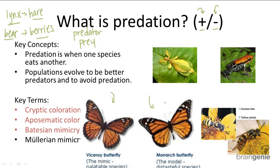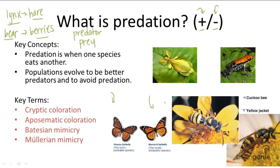Mullerian mimicry is when multiple poisonous organisms mimic each other, giving them the advantage of combined numbers so that predators learn more quickly to avoid organisms with that particular appearance. That's why bees and yellow jackets look so similar. Just remember that predation is between the predator and the prey, and the prey often has evolved passive defenses to avoid the predator.